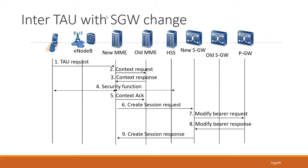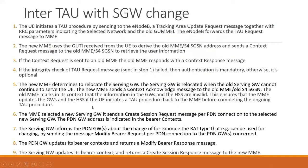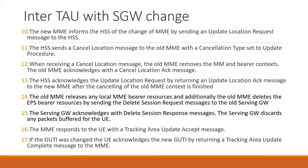So: create session request, modify bearer request, and then create session response. I hope it's clear now. So: update location, update location acknowledgement, delete bearer. This is your basic flow for a tracking area update where there is an SGW change. You can read the description once I share it, and if you have any concern you can consult with me and with the 3GPP documentation.